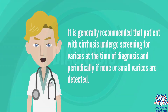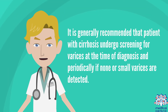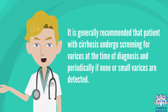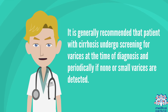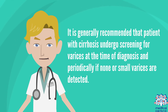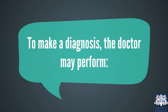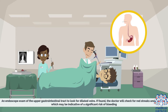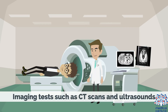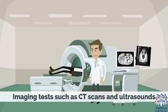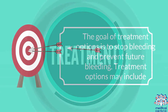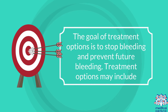It is generally recommended that patients with cirrhosis undergo screening for varices at the time of diagnosis, and periodically if small varices are detected. To make a diagnosis, the doctor may perform an endoscope exam of the upper gastrointestinal tract to look for dilated veins. If found, the doctor will check for red streaks and red spots, which may be indicative of a significant risk of bleeding. Imaging tests such as CT scans and ultrasounds may also be used.